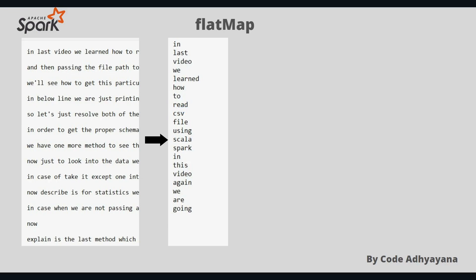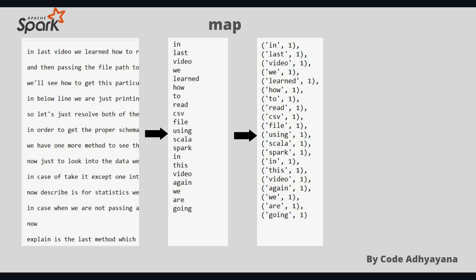We'll use the map method. What this will do is take each word and assign it a value of one, because we want to count occurrences.